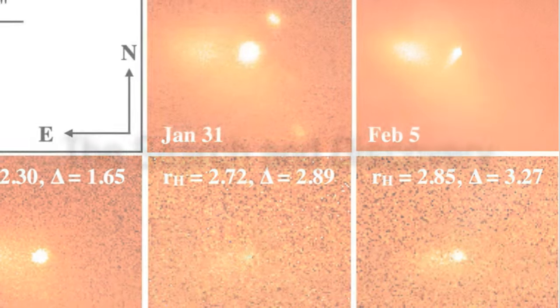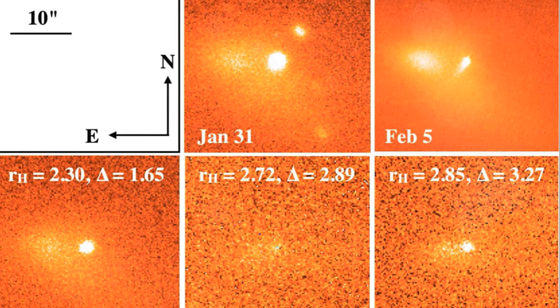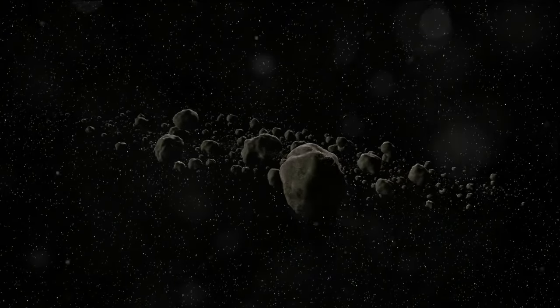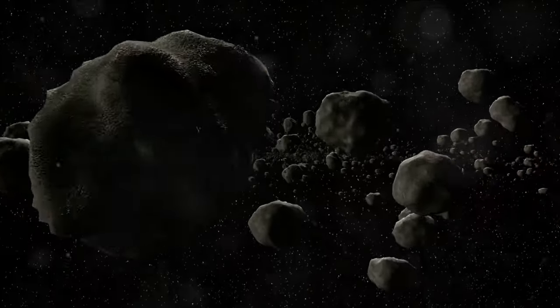The hunt for these elusive icy bodies beyond Neptune began in earnest in 1987. Astronomers David Jewett and Jane Lew embarked on a dedicated search, peering into the depths of our solar system with keen eye and unwavering determination.